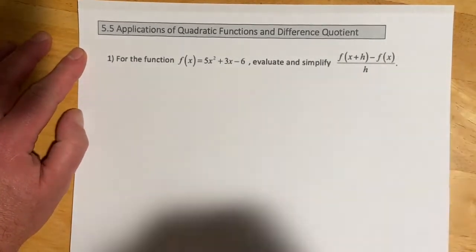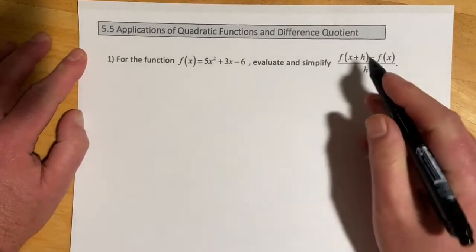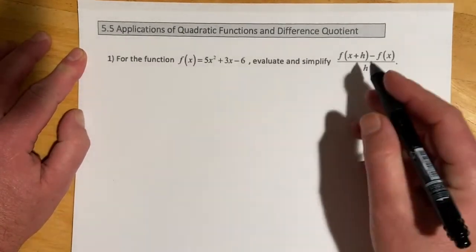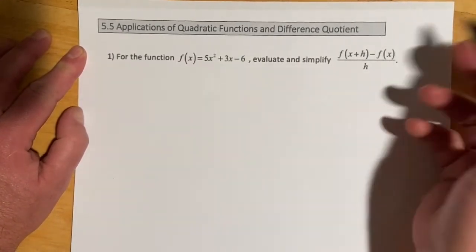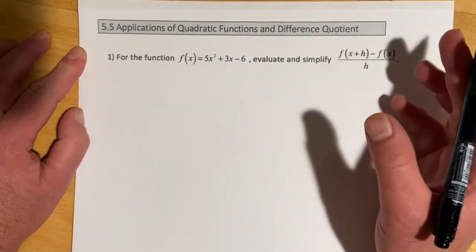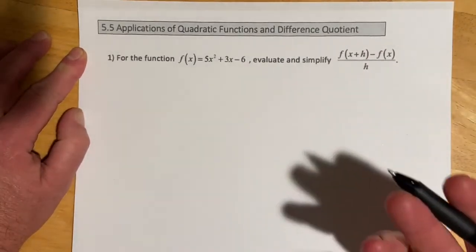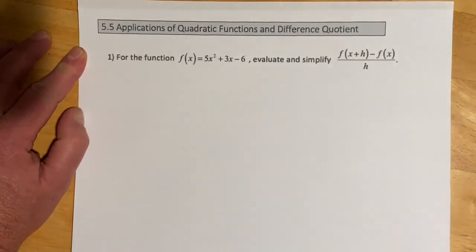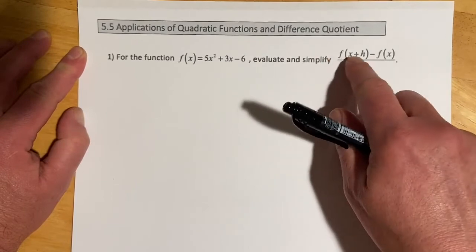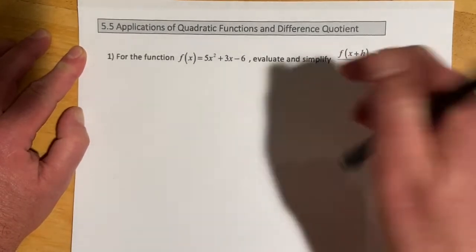So this is the difference quotient that we saw back in, I think it was chapter 1, or maybe chapter 2 with linear equations. It's back again with quadratics. And so to evaluate the difference quotient, remember this was our formula that's going to eventually lead to pretty much first quarter calculus, but right now we're using it more as an exercise in function notation.